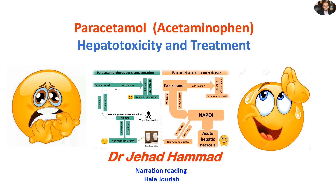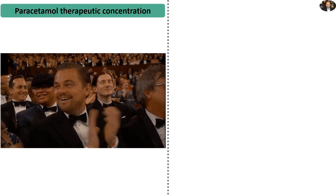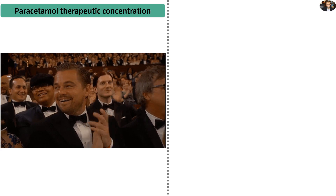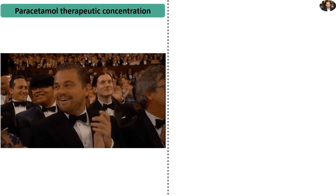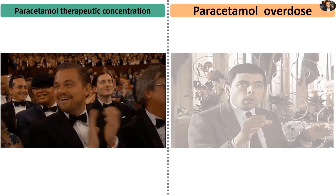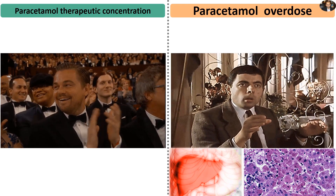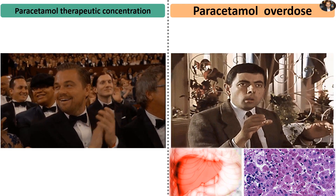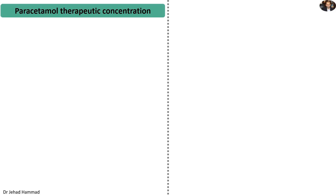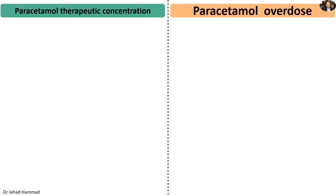Paracetamol, or acetaminophen, hepatotoxicity and treatment. Paracetamol at therapeutic dose has a very good safety profile. However, paracetamol overdose is the most common cause of acute hepatic failure. To answer how paracetamol overdose induces such notorious fatal hepatic failure, we will go through the metabolism of paracetamol under both therapeutic and overdose concentrations.